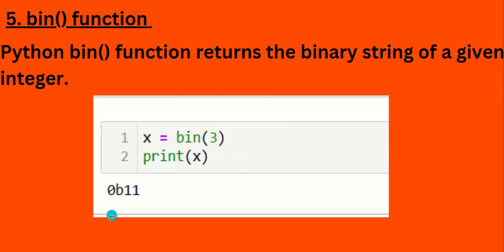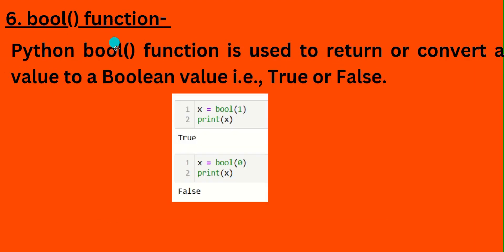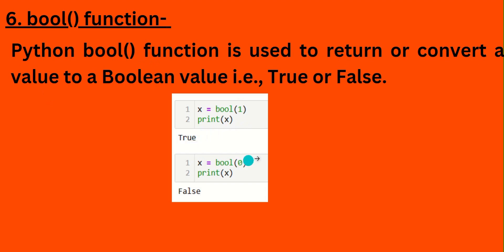The 'bool' function, as we already know, returns true or false. It is used to return or convert a value to a boolean value. 1 represents true and 0 represents false. So bool(1) gives true and bool(0) gives false.